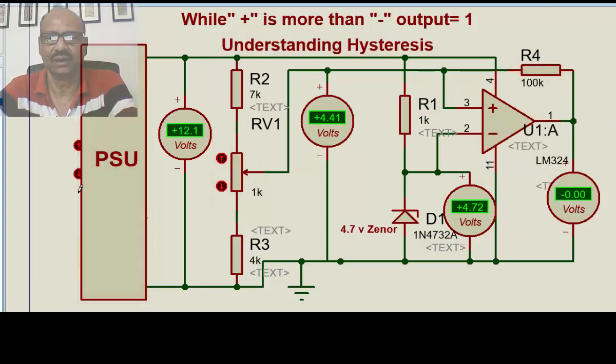Now the voltage is 12.1, the supply voltage is 12.1 and we find this is something about 4.41 and as usual, this will remain constant around 4.72 or little plus or minus. Now you see, there we had seen just a 0.1 voltage difference. The output was changing. Now, you see what is happening here.